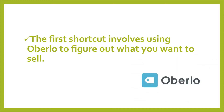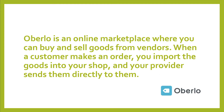Figuring out what you'll sell: you've built a Shopify store and are ready to start building your e-commerce empire, so what comes next? The first shortcut involves using Oberlo to figure out what you want to sell. Oberlo is an online marketplace where you can buy and sell goods from vendors. When a customer makes an order, you import the goods into your shop, and your provider sends them directly to the customer. You never have to think about wasting time packaging orders or squandering money by shopping in bulk. Oberlo is free to use and you only pay for a product when a customer orders it.